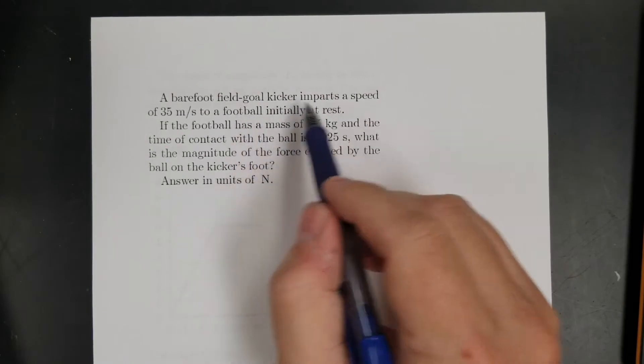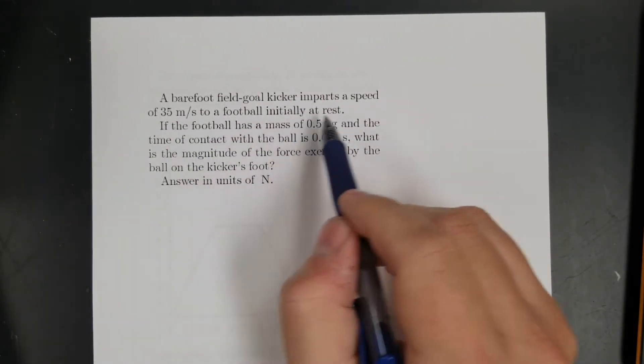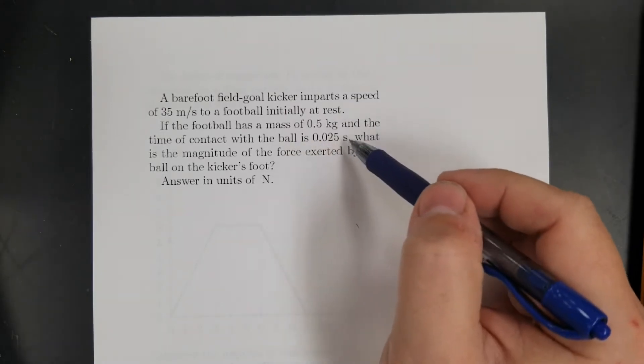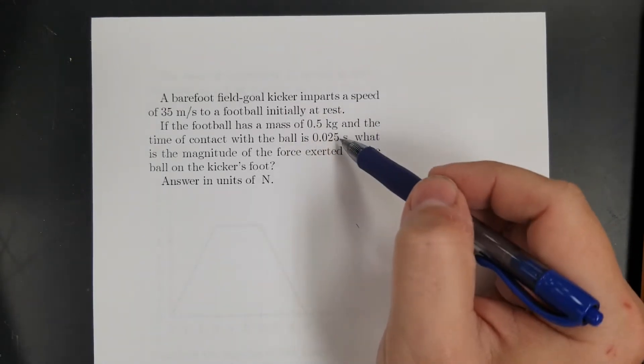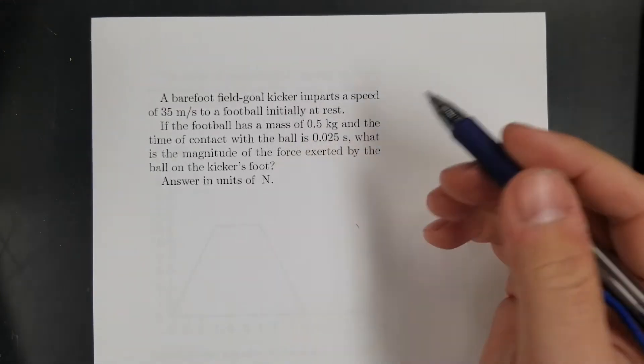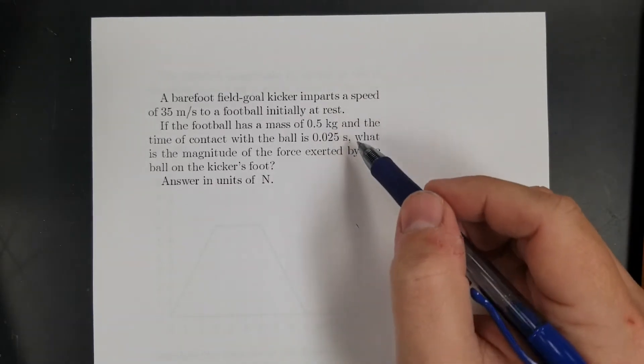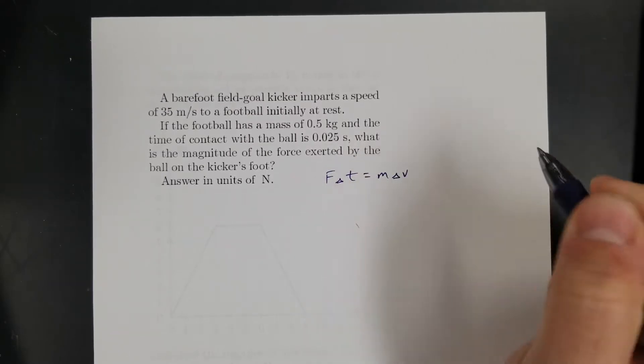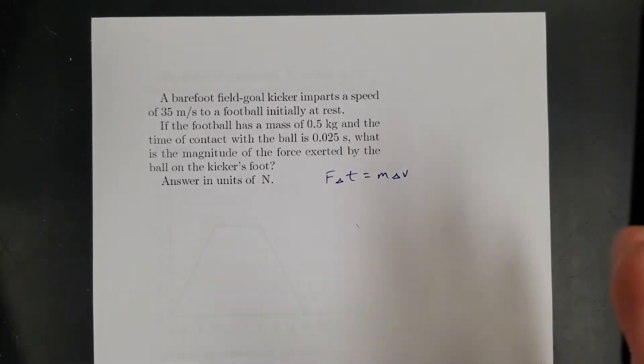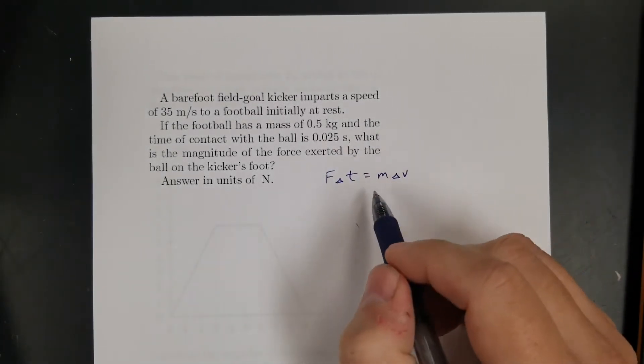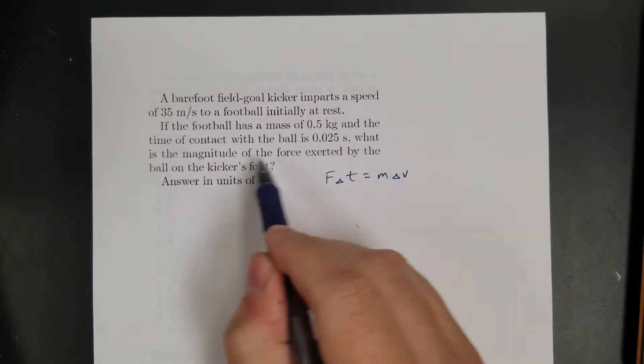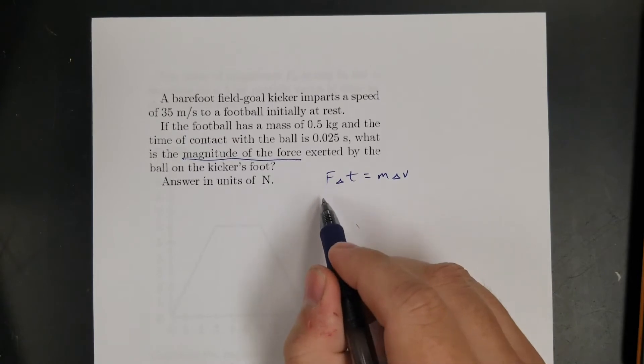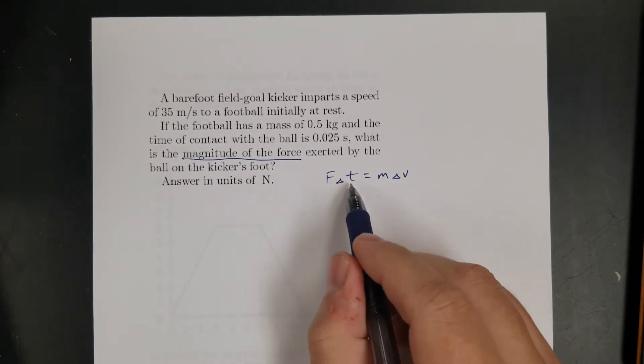All right, so here's another one. Barefoot field goal kicker imparts a speed of 35 meters per second to a football at rest. The football has a mass of 0.5 kilograms. Time of contact. Okay, so I've got time. I need force. Okay, so this is an impulse problem, because it tells me the time, right? So I know that I'm going to use this equation, right? It's an impulse momentum relationship. Okay, so let's see. I'm trying to figure out what's the magnitude of the force.